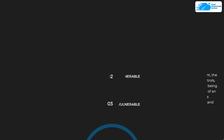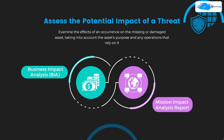At number six we have assessing the potential impact of a threat. You need to examine the effects of an occurrence on the missing or damaged asset, taking into account the asset's purpose and any operation that relies on it. To gather this data you can start with a business impact analysis report, known as a BIA, or a mission impact analysis report. A qualitative evaluation of system impact could occur in the high, medium, or low range.